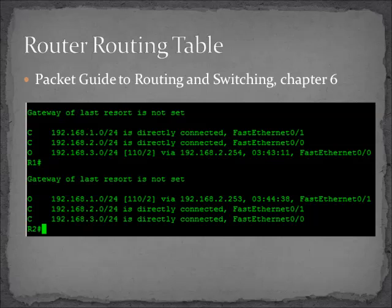Hosts have routing tables, and so do routers. Here's an example of a router routing table — you can see there's a network we're going to and then an interface associated with it. If you look at the host routing tables, the interface is also indicated in that table. If you need a refresher on how these operate, just go to chapter 6 in the same book.